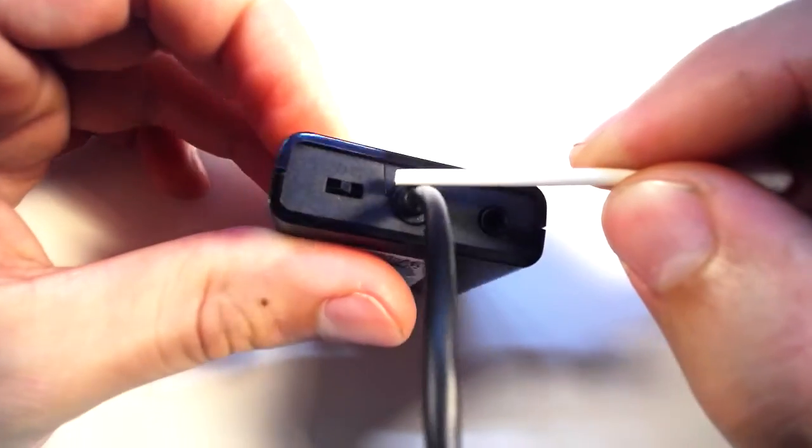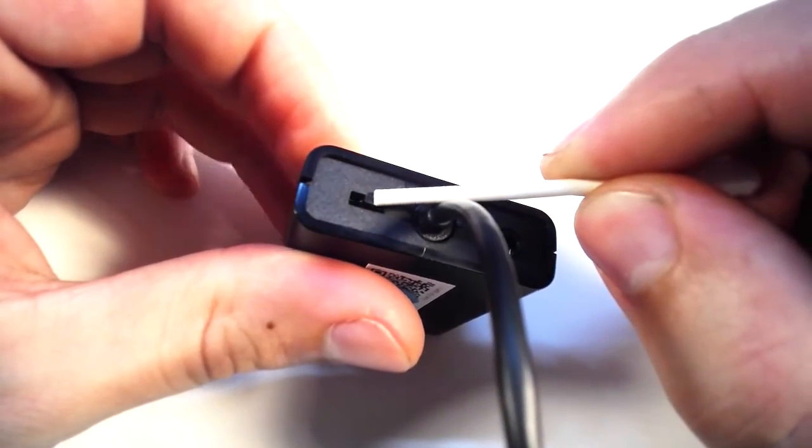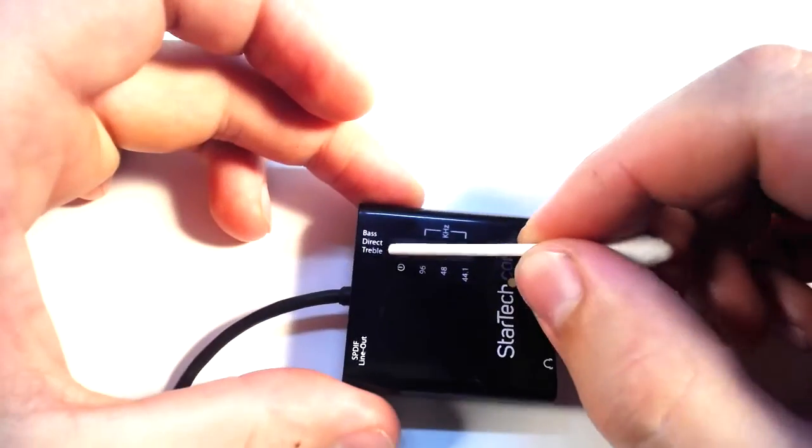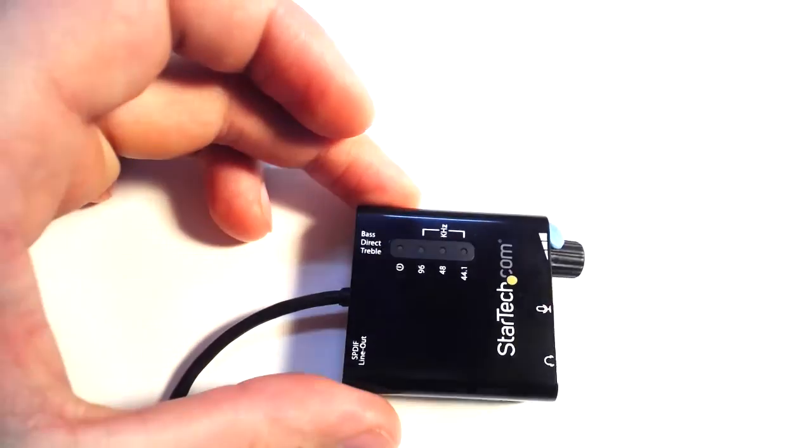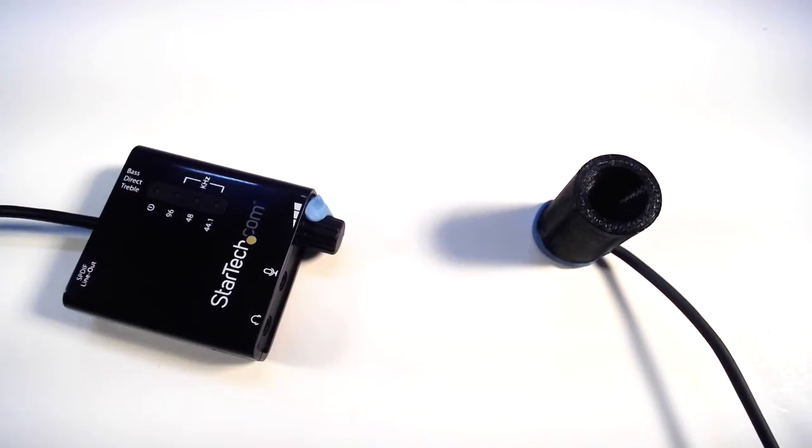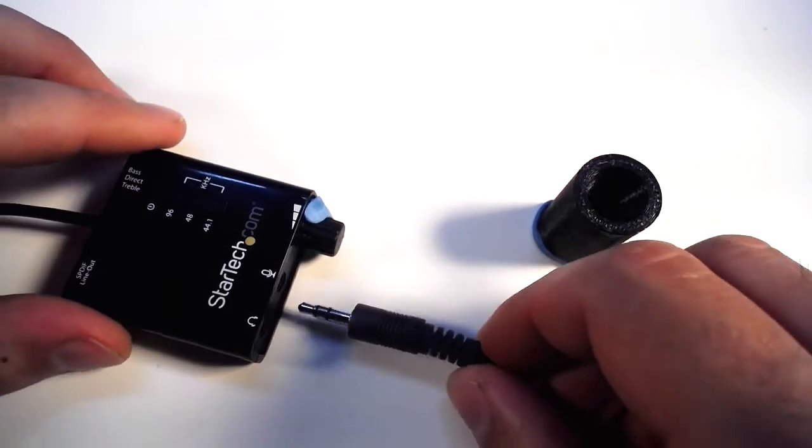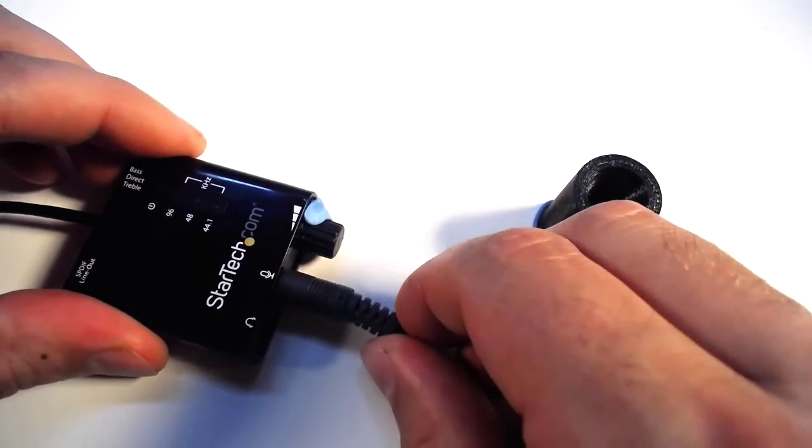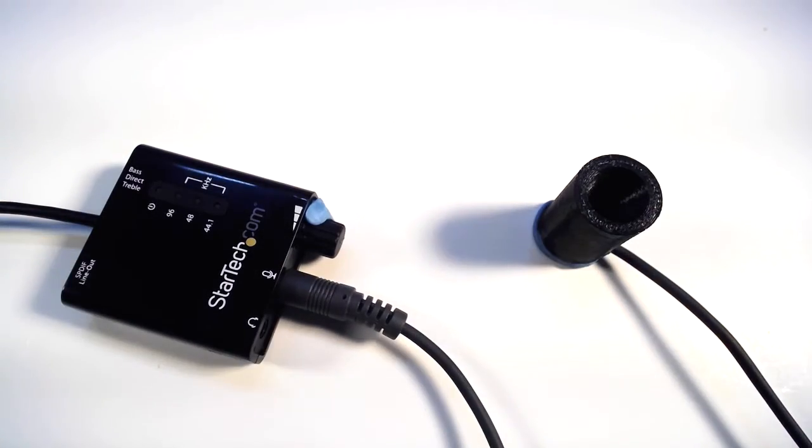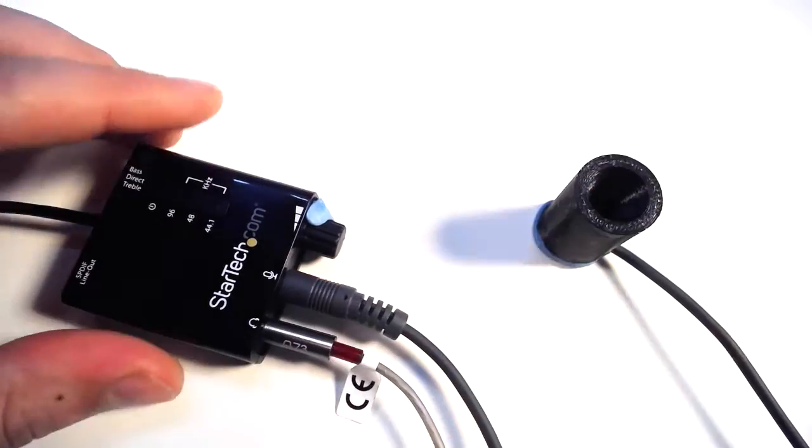Then turn the switch on the back to the middle position which corresponds with direct. That will give you the flat frequency response that you need. Now we can connect the Veritas to the mic-in jack and connect our in-ear monitor to the headphone jack.